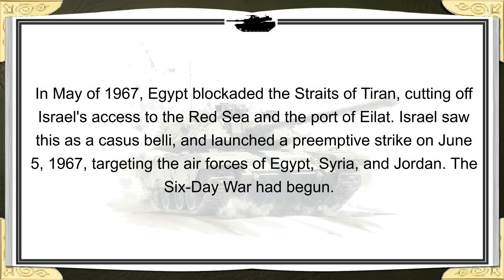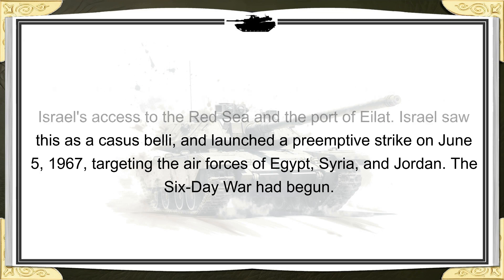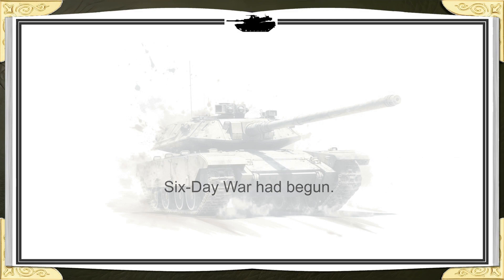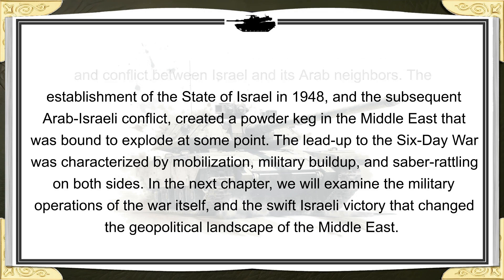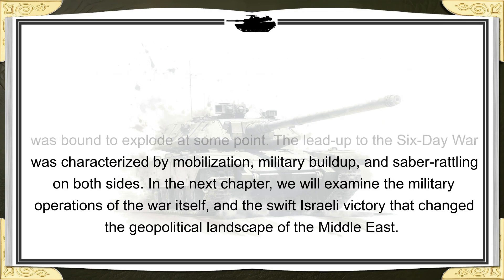In May of 1967, Egypt blockaded the Straits of Tiran, cutting off Israel's access to the Red Sea and the Port of Eilat. Israel saw this as a casus belli and launched a preemptive strike on June 5, 1967, targeting the air forces of Egypt, Syria, and Jordan. The Six-Day War had begun. The lead-up to the Six-Day War was characterized by mobilization, military build-up, and saber-rattling on both sides.